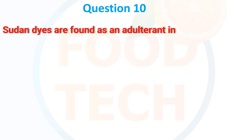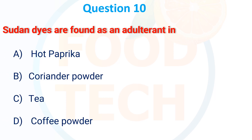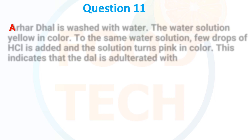Sudan dye is found as an adulterant in: A. Hot paprika, B. Coriander powder, C. Tea, D. Coffee powder. The correct answer is hot paprika.